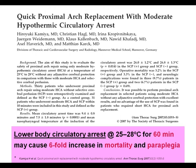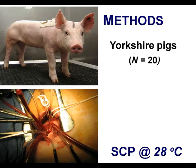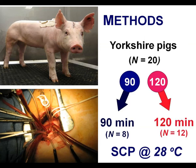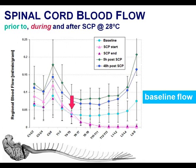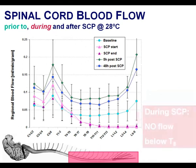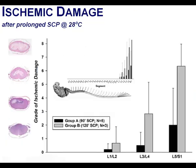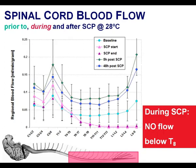To determine the degree to which prolonged SACP at 28 Celsius would expose the spinal cord to severe ischemic injury, we measured blood flow to the cord in 20 juvenile pigs randomized to 90 and 120 minutes. The most important finding: regional spinal cord blood flow at baseline, five minutes after start of SACP, and at the end of SACP showed no flow to the lower thoracic and lumbar cord for the entire duration of SACP. Whatever core temperature is chosen for this region, it will persist for the entire duration without perfusion.